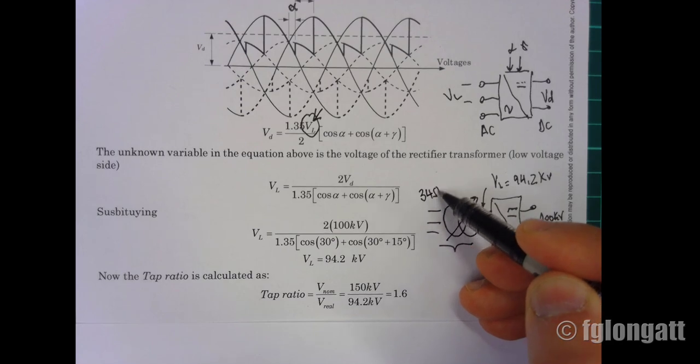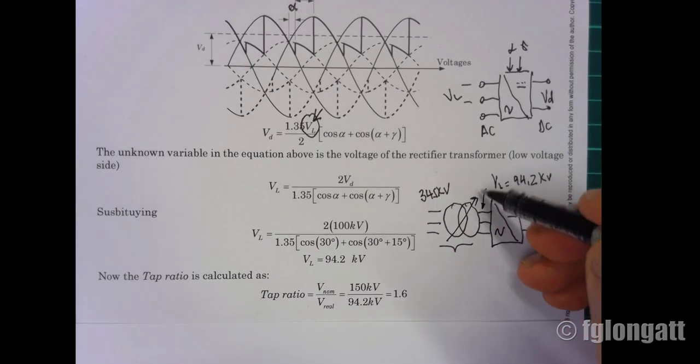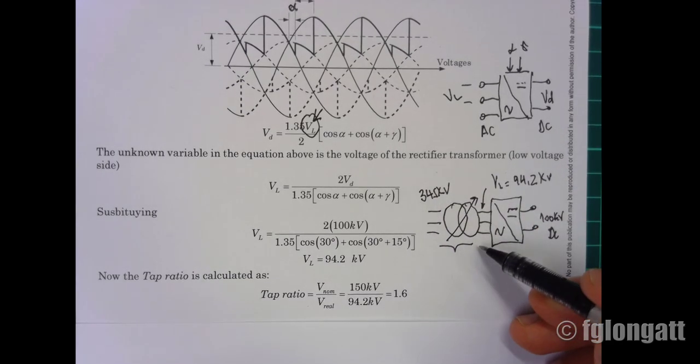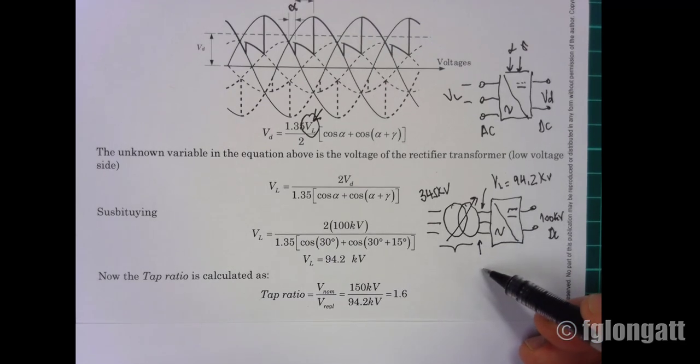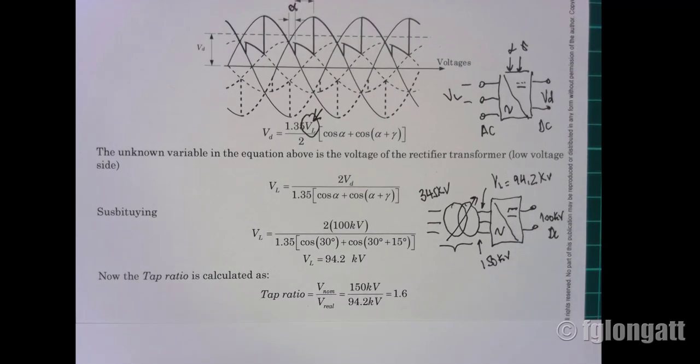Now, if the tap changer is located at position neutral—the central point—the voltage should be 150. But because we are using a lower voltage, 94.2, we calculate the ratio, the tap ratio.